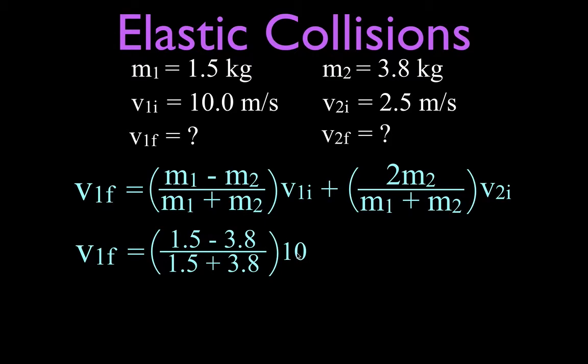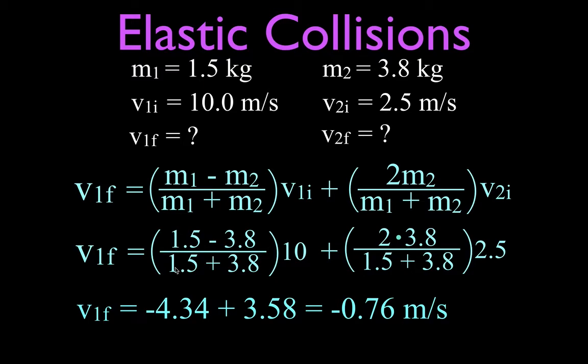So first we have 1.5 minus 3.8 divided by the sum of those two masses multiplied by the initial velocity of mass number one, and to that we're going to add two times the mass of number two which is 3.8 kilograms divided by the sum of those two again and we multiply that times the initial velocity of mass number two. And when we do that carefully you should get that this is minus 4.3 because this is 1.5 minus 3.8 so this is going to be a negative term, this is going to be a positive term 3.58, and when we add those two together we get minus 0.76 meters per second.